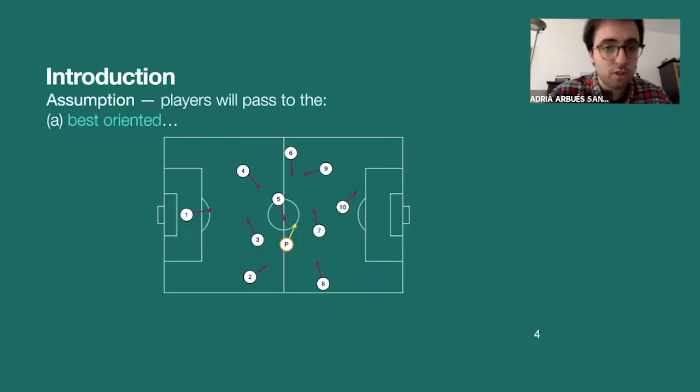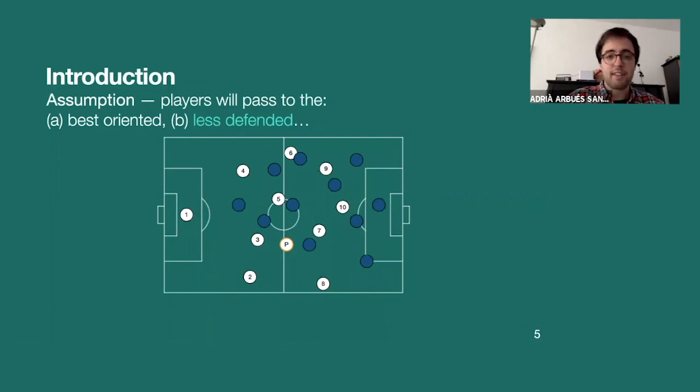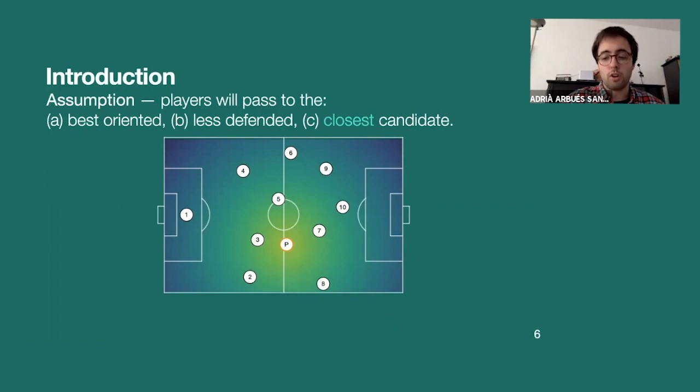So when we watch soccer on TV or live, we always assume that the passer, there is the player that has this orange circle around, will always pass to a best oriented, less defended, closest available candidate. So based on all of this,